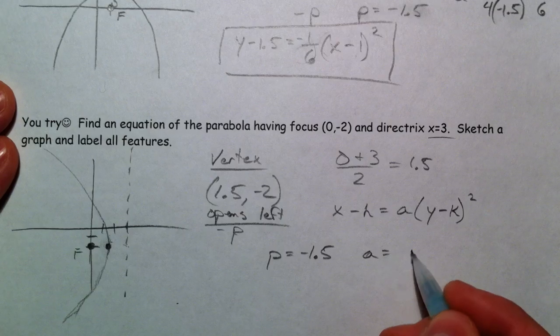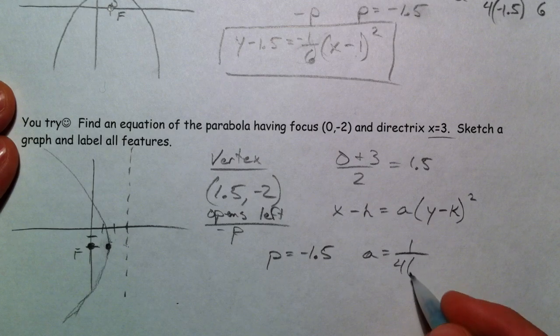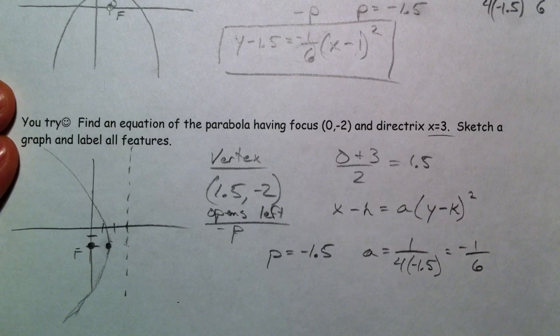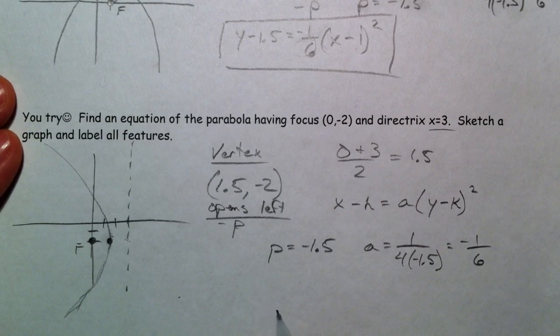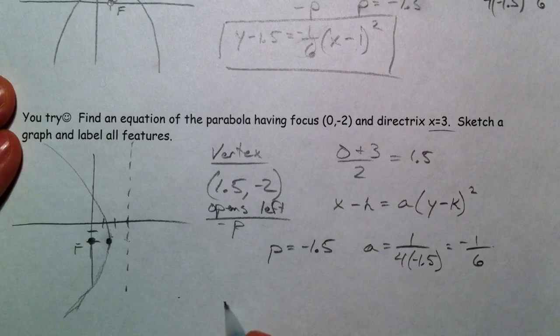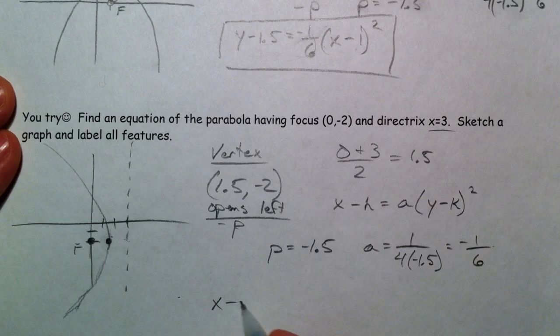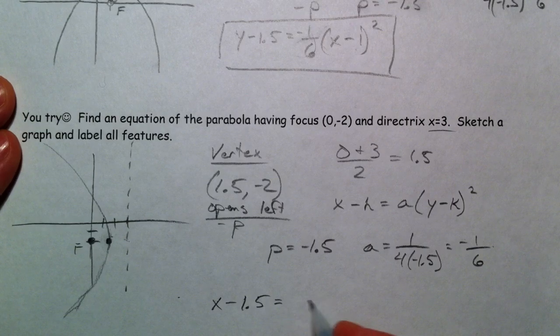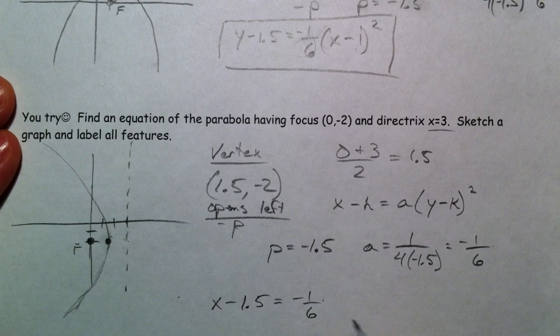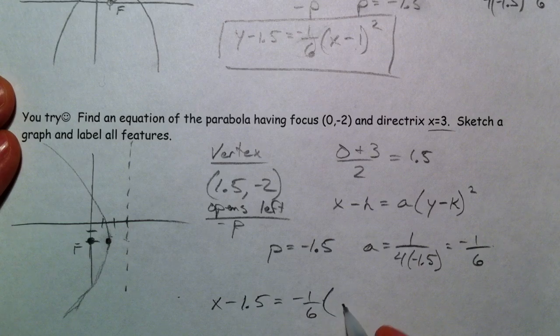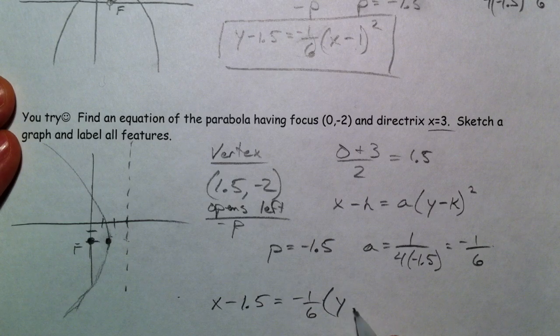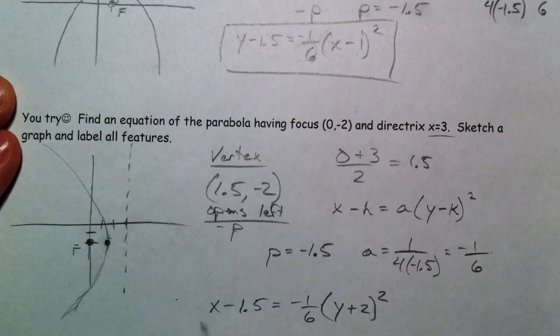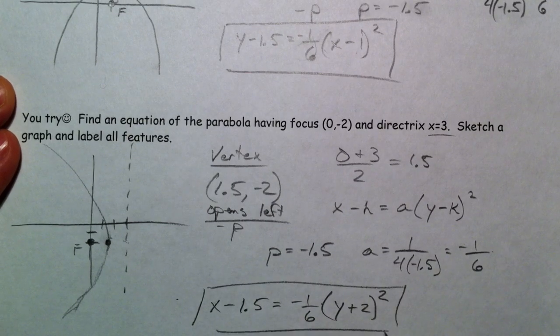And so a is 1 over 4 times—so negative 1/6 again. So this is our a. x minus our h, 1.5, equals negative 1/6, our a value, times y minus a negative 2. So I'm going to put plus 2 squared. And there's our equation.